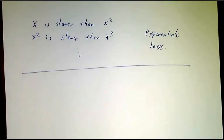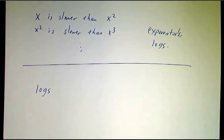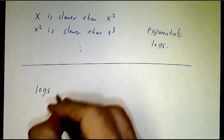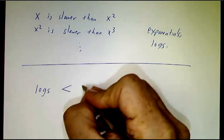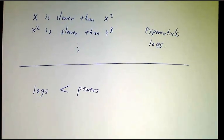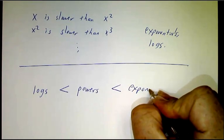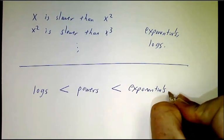So the basic rule is logs grow the slowest, then powers grow faster than logs, and exponentials grow fastest of all.